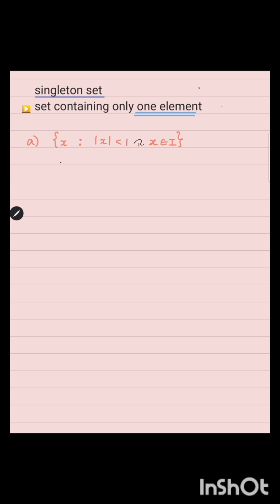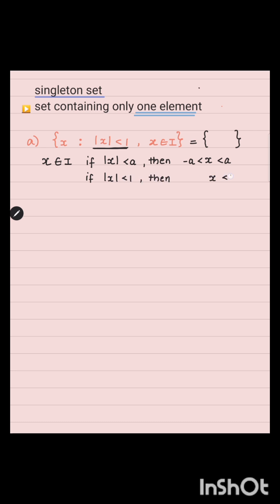The set of elements x such that modulus of x is less than one and x belongs to the set of integers — given in set builder form, we will write in roster form. Using the property: if modulus of x is less than a, then x is greater than minus a and less than a. So if modulus of x is less than one, then x is between minus one and one.